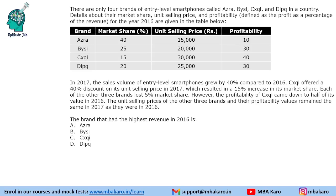Hello everyone, welcome to Aptitude Jab. This set from CAT 2018 slot 2 DILR says that there are four brands of entry level smartphones called A, B, C, D. Their market share, unit selling price and profitability are given.